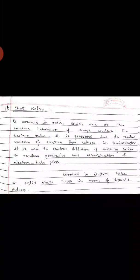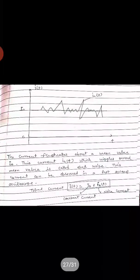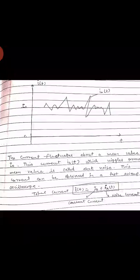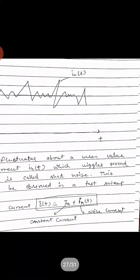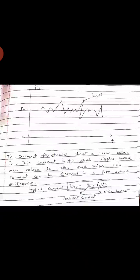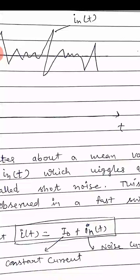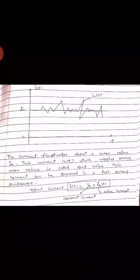In shot noise, current in the electron tube or solid-state device flows in the form of discrete pulses. The total current I(T) equals the mean value I₀ plus the noise current I_n(T), where I_n(T) is the current that fluctuates around the mean value. These pulses can be observed on a fast-sweep oscilloscope. This fluctuating component is what is called shot noise.